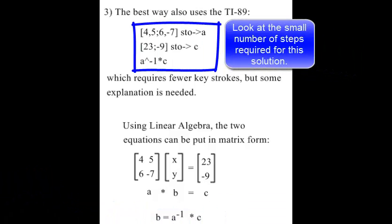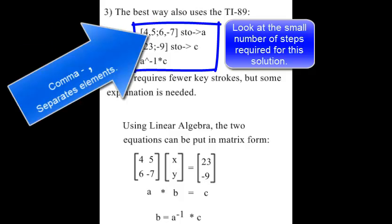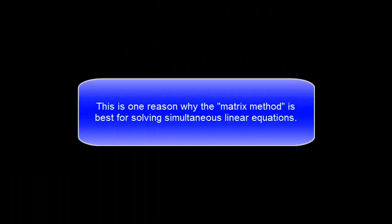Look at the small number of steps required for this solution. Notice the bracket and the comma and the semicolon. This is one reason why the matrix method is best for solving simultaneous linear equations.